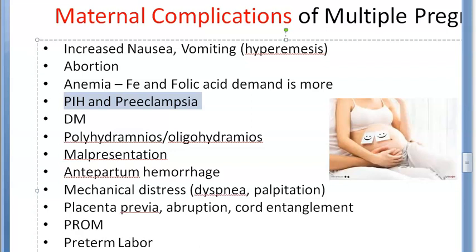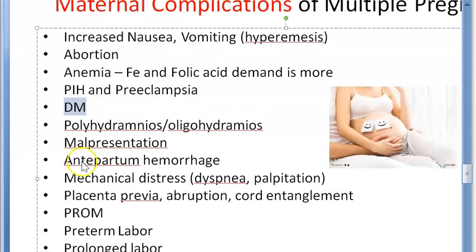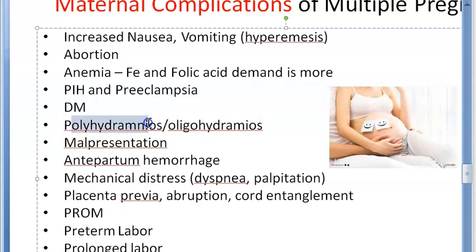Then there can be more chance of preeclampsia and pregnancy-induced hypertension because of the super-abundance of chorionic villi. She can also have more chance of diabetes mellitus, and there can be polyhydramnios or oligohydramnios — oligohydramnios is less amniotic fluid, polyhydramnios is more amniotic fluid.